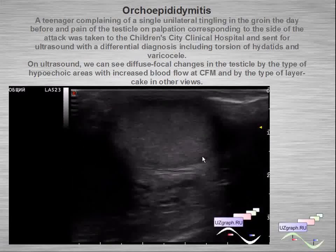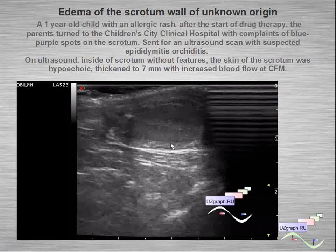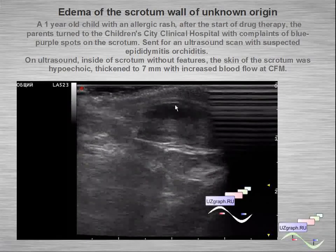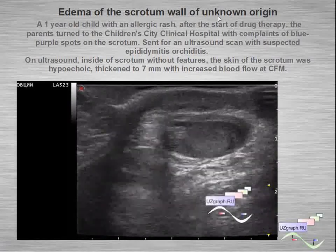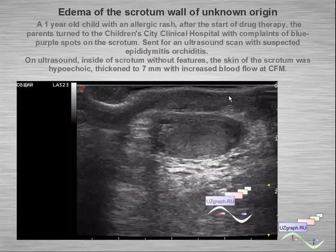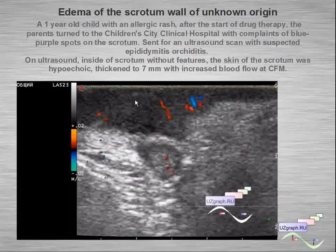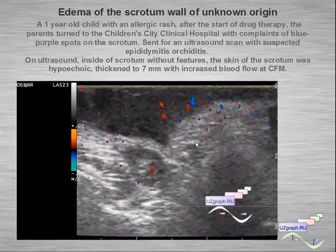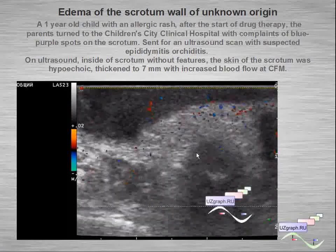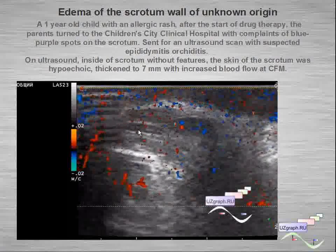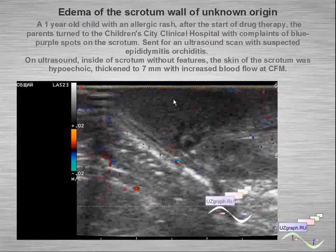Another example of acute scrotum: this is edema of the scrotum of unknown origin in a one-year-old child. We can see a completely normal testicle with only a thickened scrotal wall with increased blood flow at color flow mode.